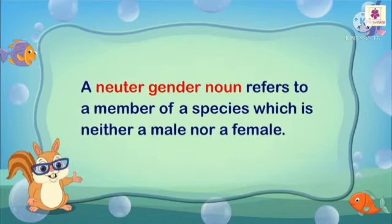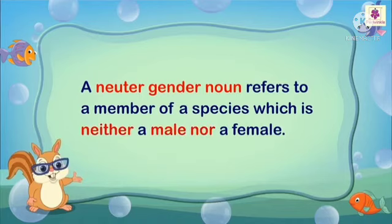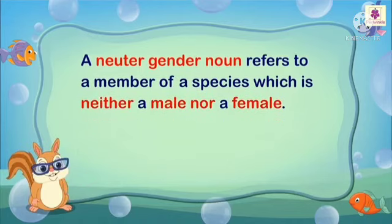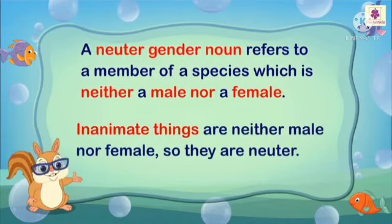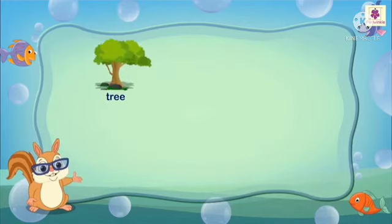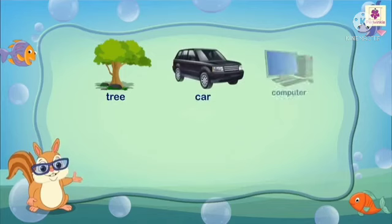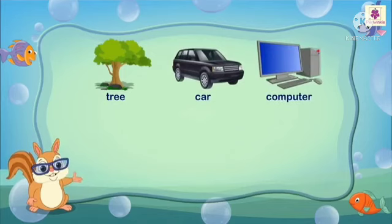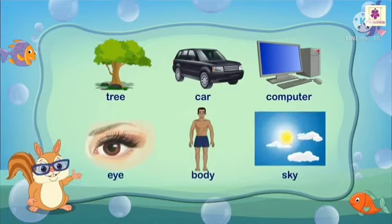A neuter gender noun refers to a member of a species which is neither a male nor a female. For example, tree, car, computer, eye, body, sky, etc.